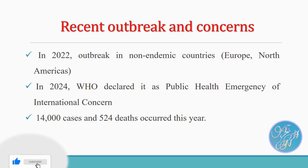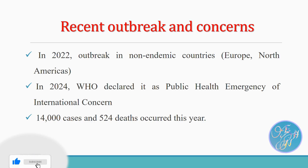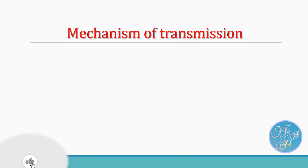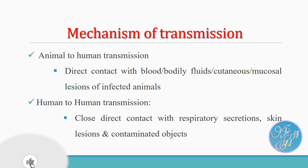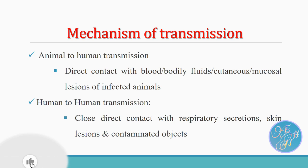Now, how is monkeypox transmitted? There are two major types of transmission. Firstly, it is transmitted from animal to human through direct contact with blood, bodily fluids, and cutaneous or mucosal lesions of infected animals. The next is human-to-human transmission, which occurs through close direct contact with respiratory secretions, skin lesions, and contaminated objects of infected individuals.